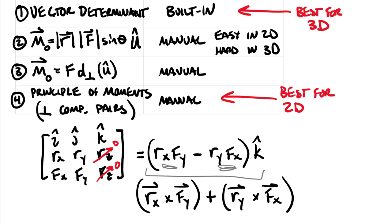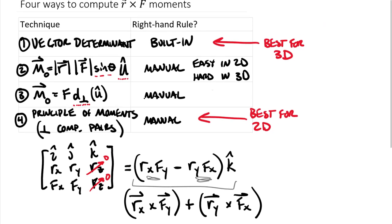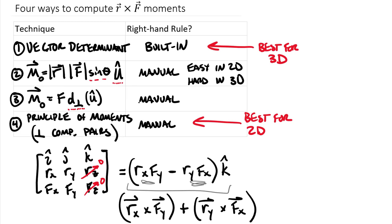While techniques two and three work, finding D-perpendicular can be non-trivial geometrically. Finding the direction of û on a two-dimensional problem is pretty easy — in or out of the board — and if you already have the sine of the angle between the vectors you could jump right into that technique. But often vectors are expressed in components, and if you have components you're best to use the principle of moments rather than solving for the angle between vectors in technique two. None of the four methods are wrong — they just have different advantages and disadvantages. In the upcoming example I'll show you how to compute a two-dimensional moment using these different techniques. Hope you're having a great day!